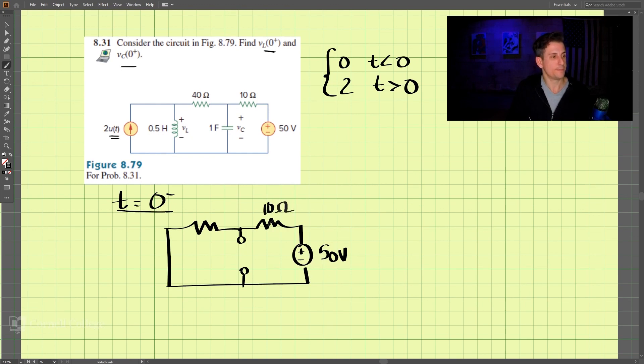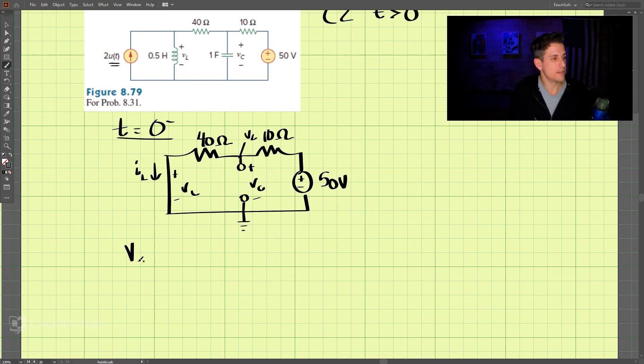Now this is 10 ohms, this is 40 ohms, and we'll call this IL, and this is VC, and then we have VL over here as well. For this circuit, we know VC by doing a voltage divider. VC at 0 minus is equal to 40 ohms divided by 40 plus 10 times our 50 volts, and that is 4/5, so that comes out to be VC is 40 volts.